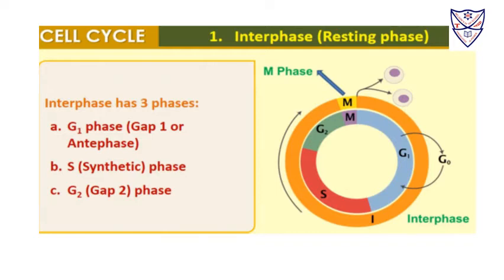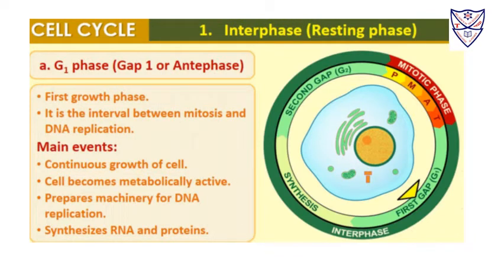In G1, it is the first growth phase — the interval between mitosis and replication. Mitosis is when the cell actually divides, and replication is when DNA synthesis occurs. During G1 there is continuous growth of the cell; the cell becomes metabolically active and prepares the machinery for DNA replication. It also synthesizes RNA as well as protein.